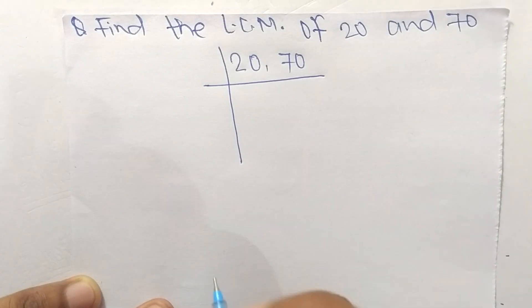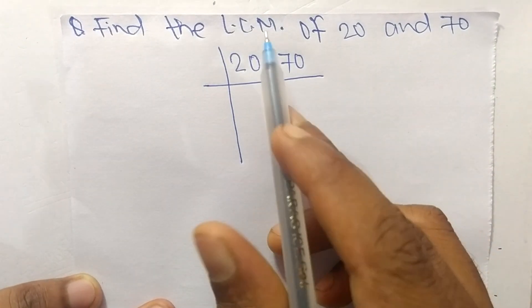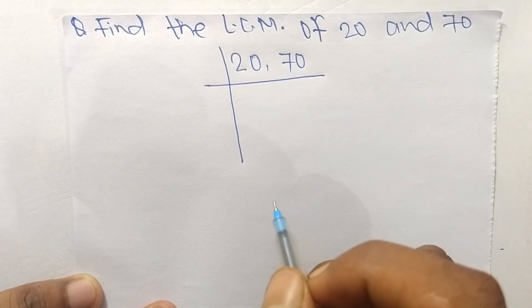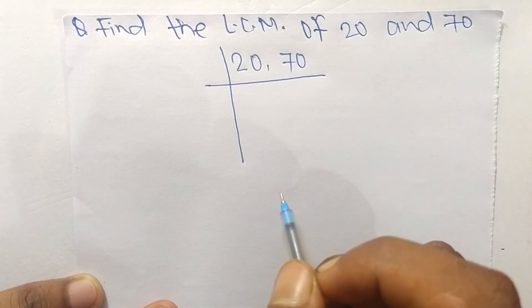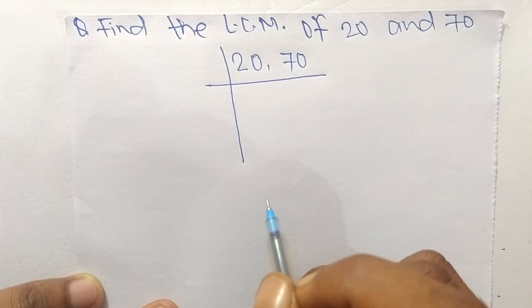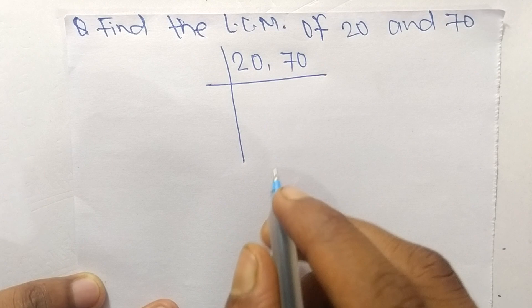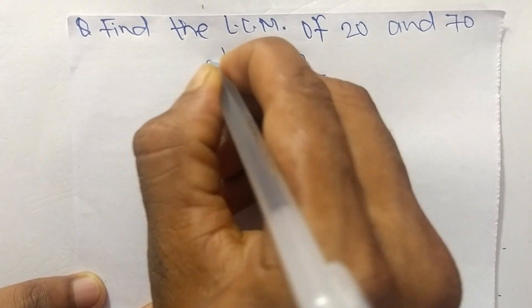Today in this video we shall learn to find the LCM of 20 and 70. To find LCM, first we have to choose the lowest number that can exactly divide 20 and 70.